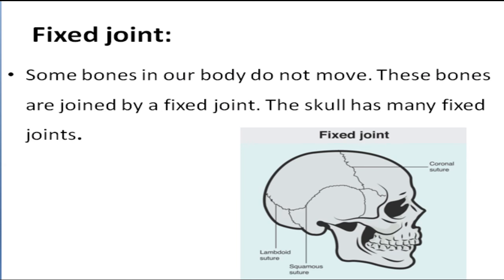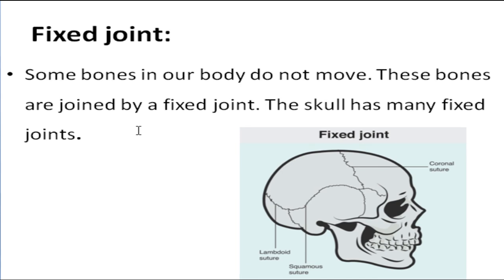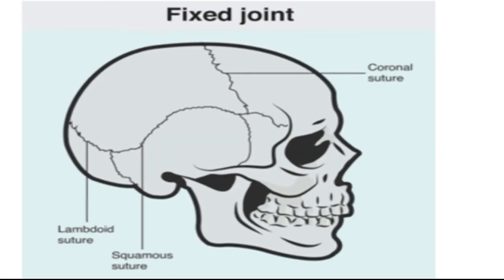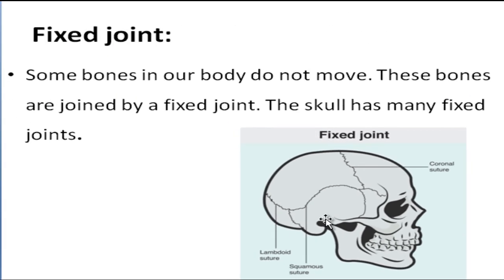Our next keyword is fixed joint. Some bones in our body do not move. These bones are joined via a fixed joint. For example, the skull has many fixed joints, so those bones cannot move.